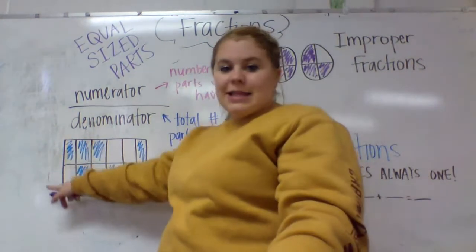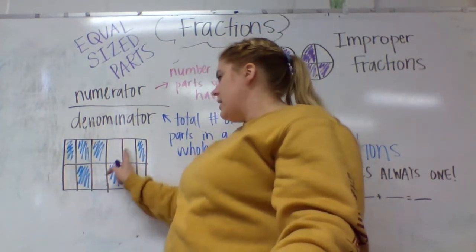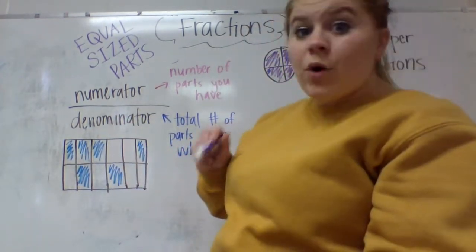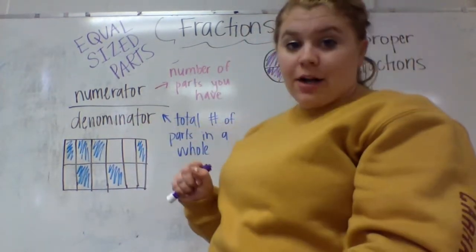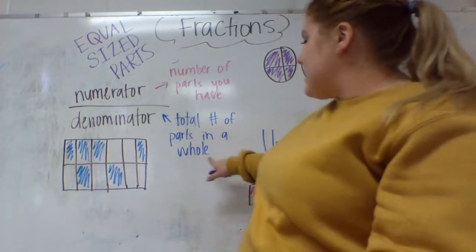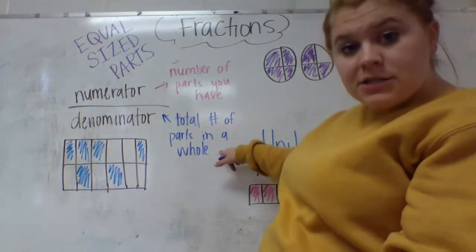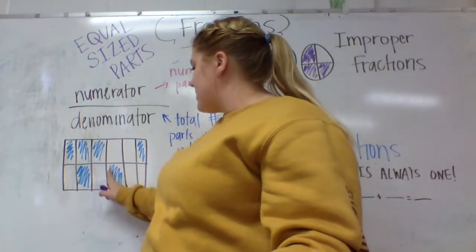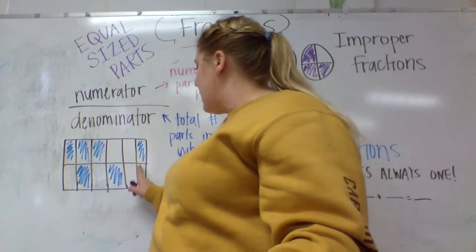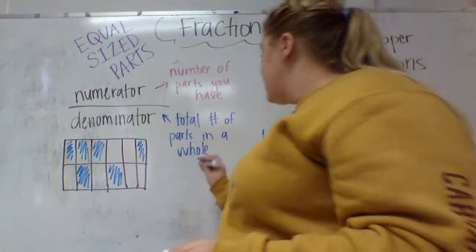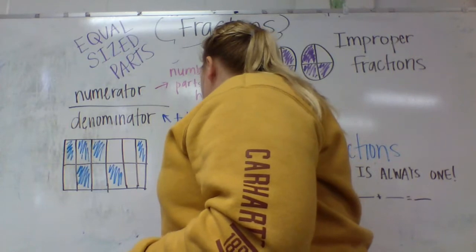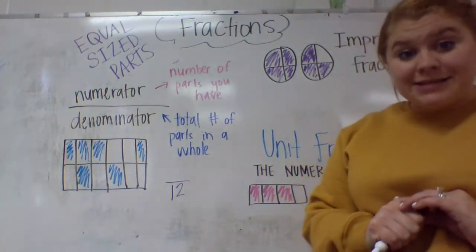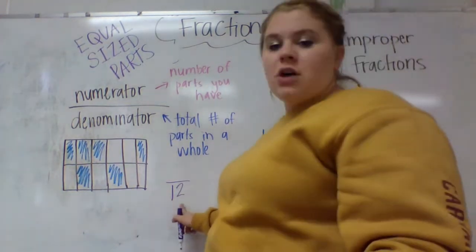If we look at this fraction — and I shaded it funny to show you that it could be shaded like this on questions you get — I want to find my denominator to figure out what this fraction is. I need to count how many total parts are in this whole. So I'm going to count: 1, 2, 3, 4, 5, 6, 7, 8, 9, 10, 11, 12. My denominator is 12 because there are 12 pieces. It takes 12 pieces to make this whole.